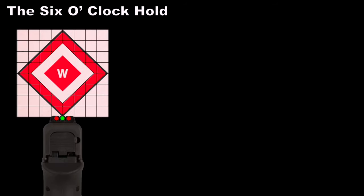To use the six o'clock hold method, while maintaining proper sight alignment, place the top of your front sight on the bottom of the target. By ensuring there is no white gap between the top of the sight and the bottom of the circle, you will maintain consistent elevation.